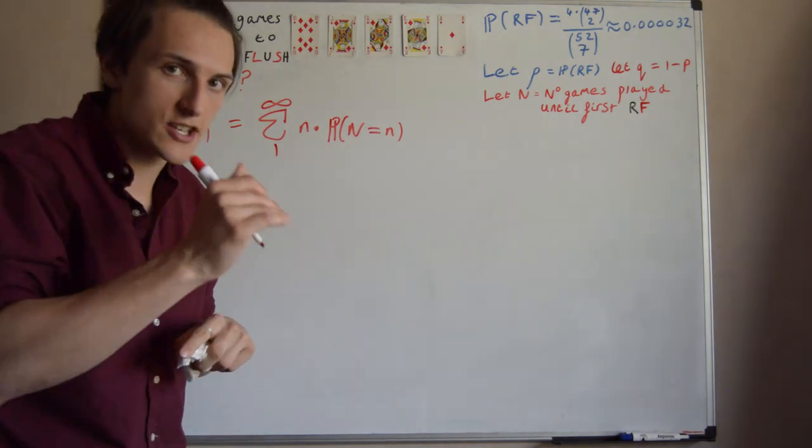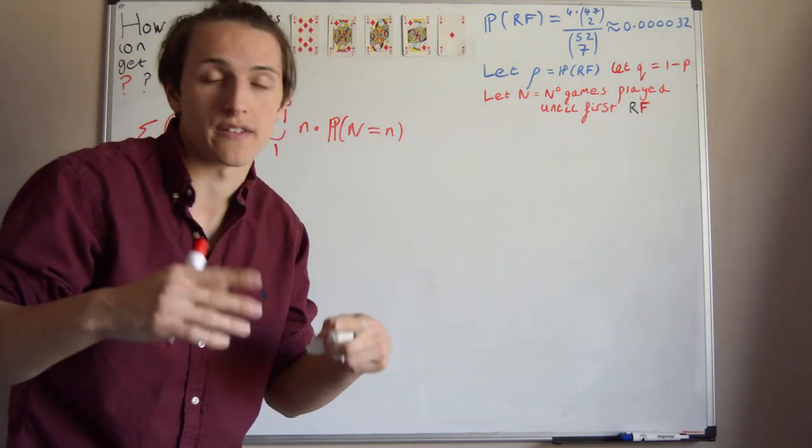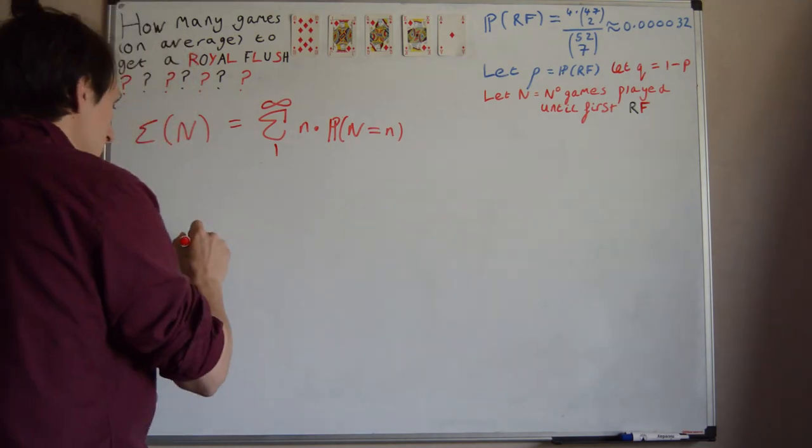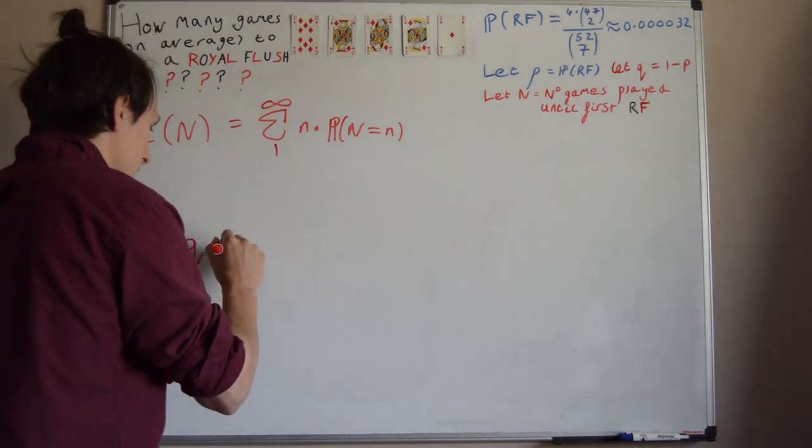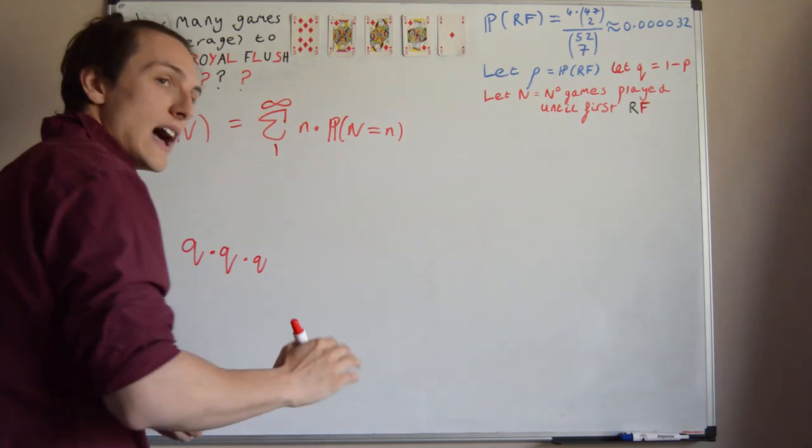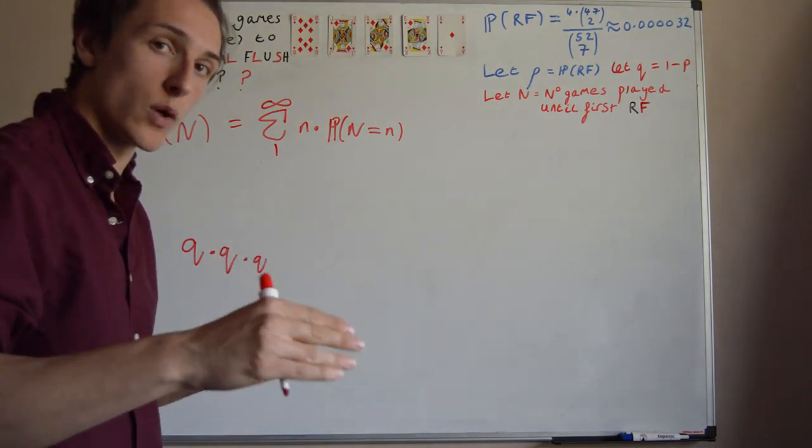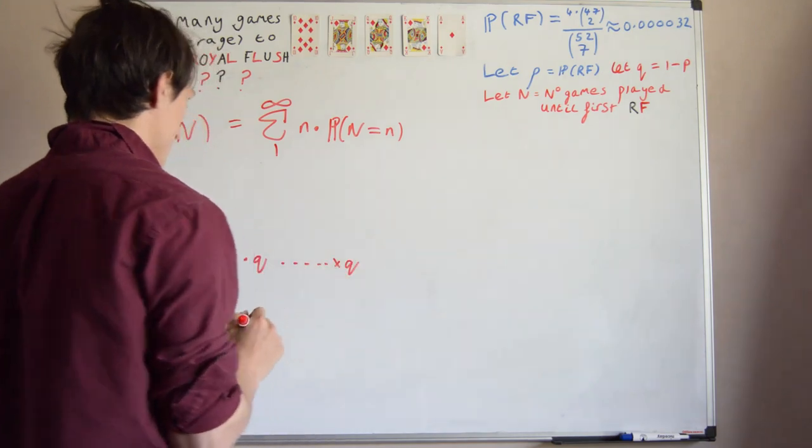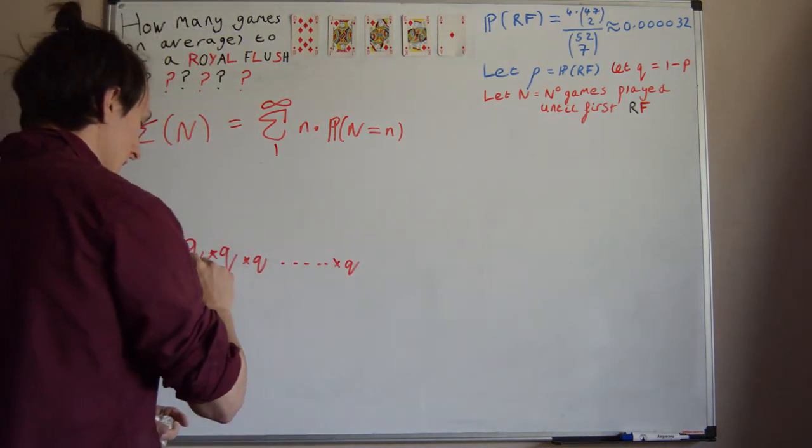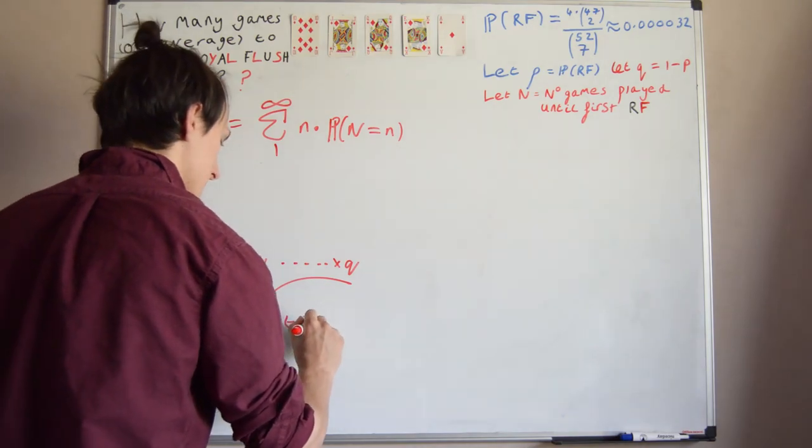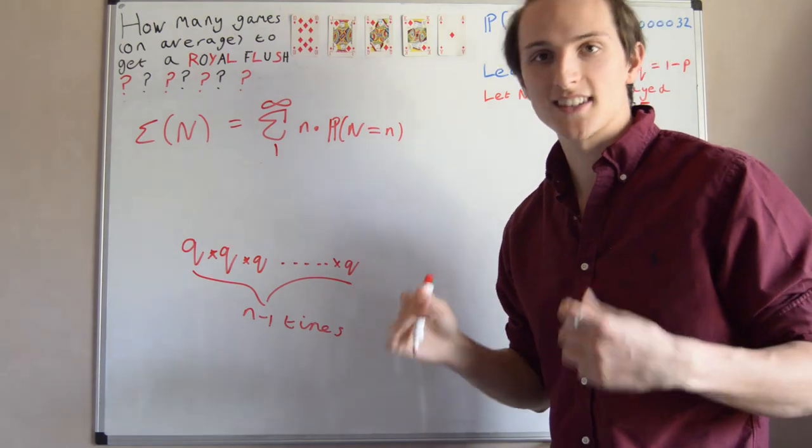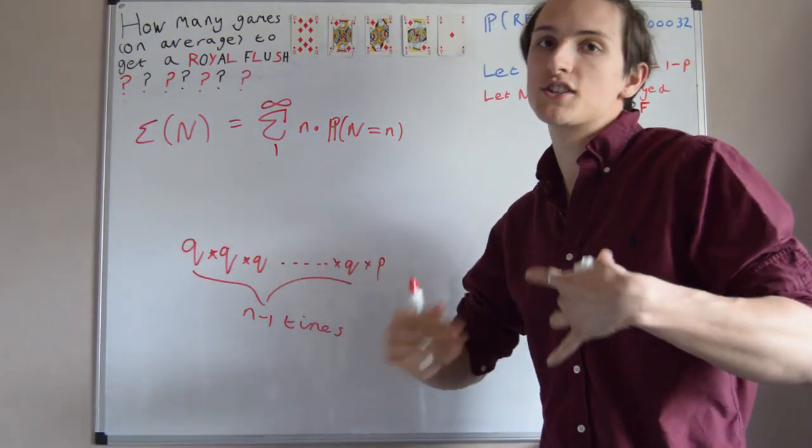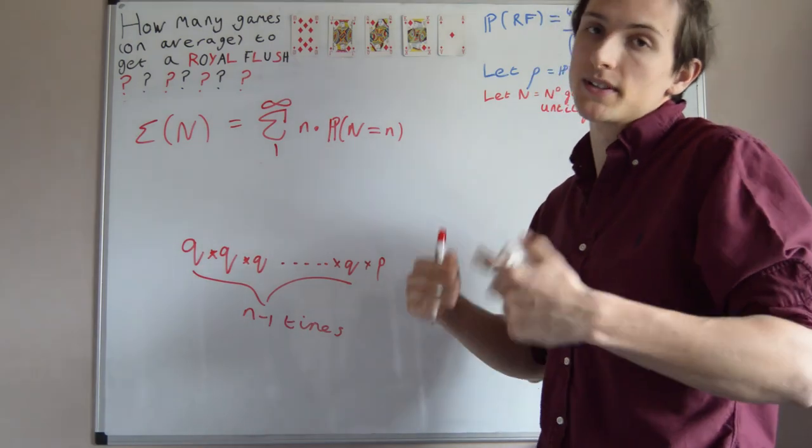Well, what is the probability that n is n? So consider if it takes us n games to get one Royal Flush, our first Royal Flush. Well, what happened? In the first game, we didn't get Royal Flush, and that happens with probability Q. And in the second game, we didn't get a Royal Flush. And in the third, and in the fourth, and in the fifth, all the way to the n-1th game, we didn't get a Royal Flush. So this is dot dot dot times Q. This happens n-1 times, and on the final nth game, we do in fact get the Royal Flush, and that happens with probability P. And the reason we can just times these things together is because each game is independent, whatever happened on the previous game doesn't affect the probability of getting a Royal Flush on the next game.